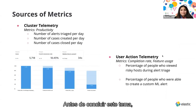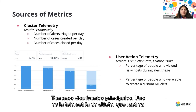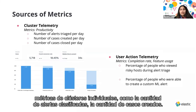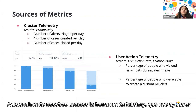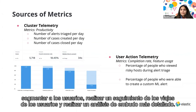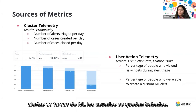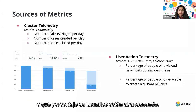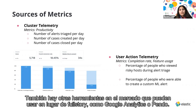We have two main sources of telemetry metrics. First is cluster telemetry, which tracks individual cluster metrics such as number of alerts triaged and number of cases created — a good fit for productivity metrics. Second is FullStory, which helps us segment users, track user journeys, and do detailed funnel analysis. For example, I can find out where users drop off in the process of creating a custom machine learning job alert, and use screen captures for initial qualitative research. Other tools like Google Analytics and Pendo exist, but we use FullStory.